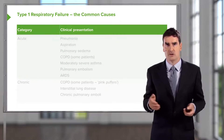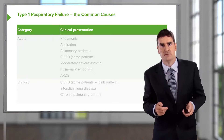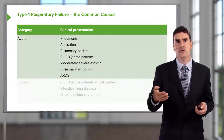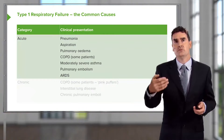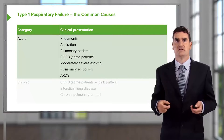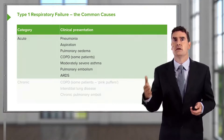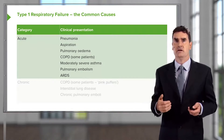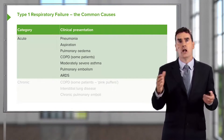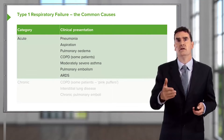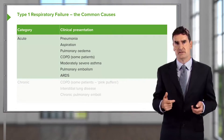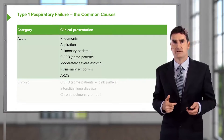What are the common causes of type 1 respiratory failure? Acutely: pneumonia, pulmonary aspiration, pulmonary edema, exacerbations of COPD in some patients, moderately severe asthma, a large pulmonary embolus, and ARDS, which will be discussed in later slides.